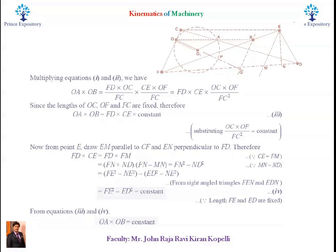Now, we see here O-A into O-B is equal to F-D into C-E into constant is considered to be third equation. And F-D into C-E is equal to constant is considered to be fourth equation. So if we just compare these two equations, equation number 3 and equation number 4 from this slide, finally we can get O-A into O-B is equal to constant.